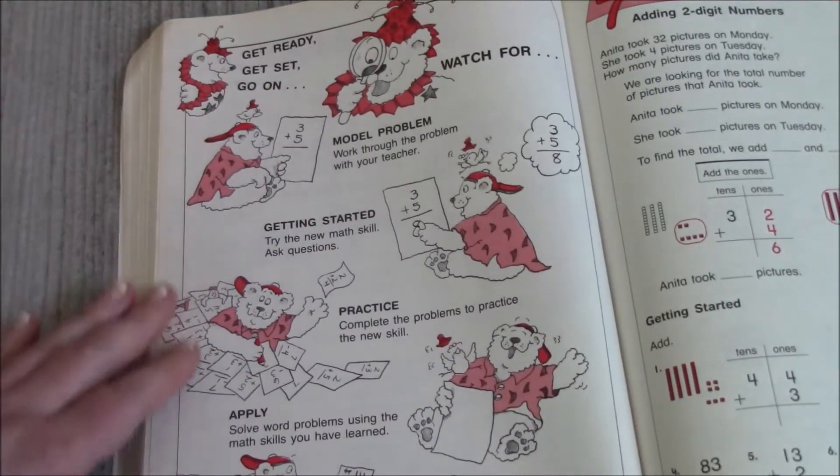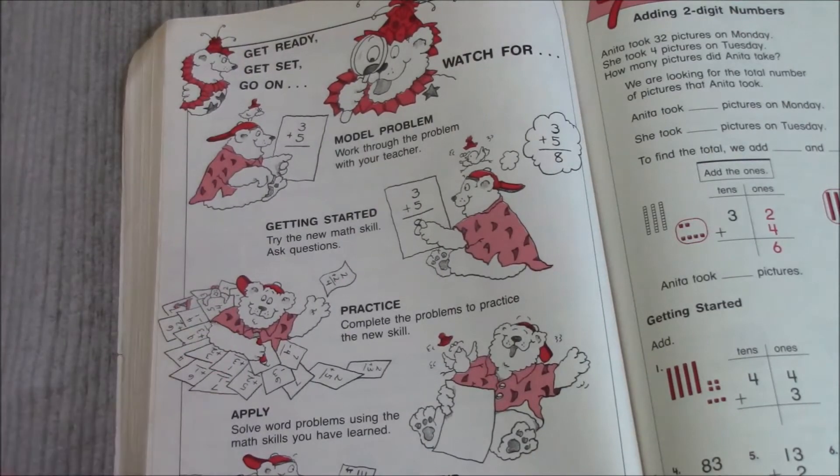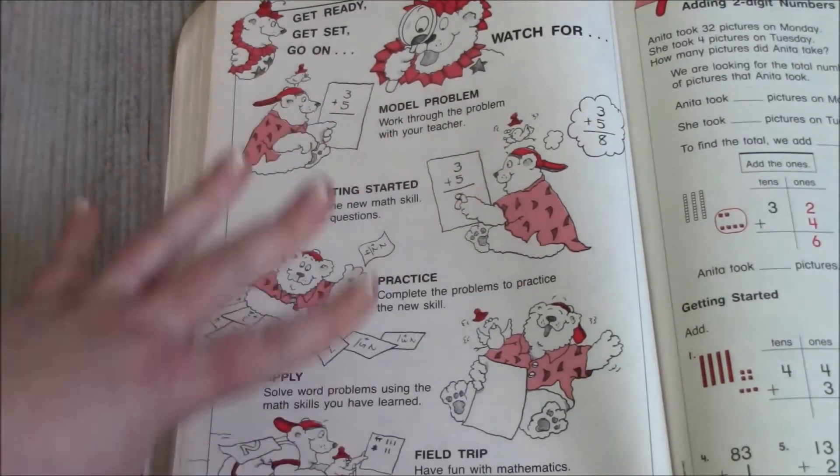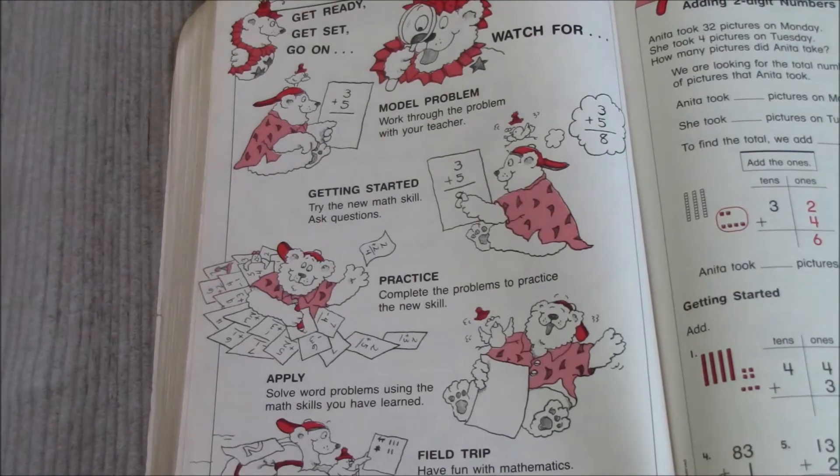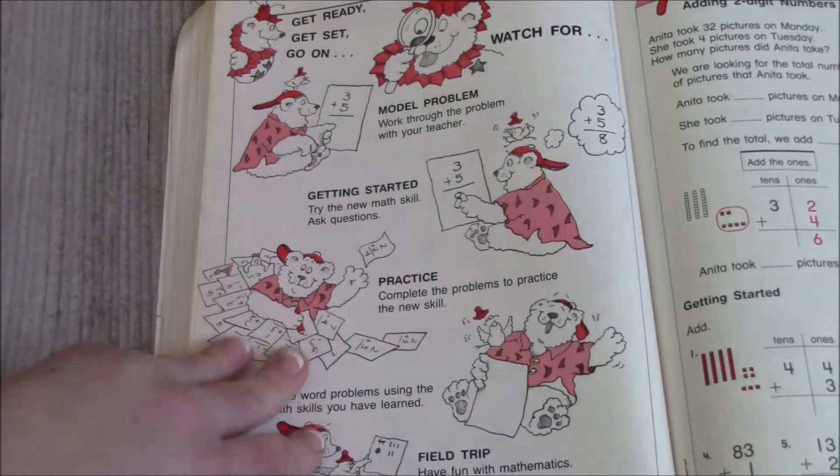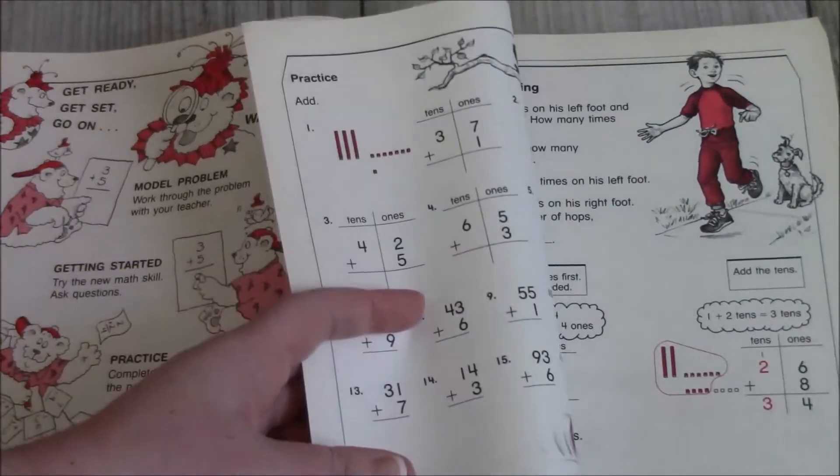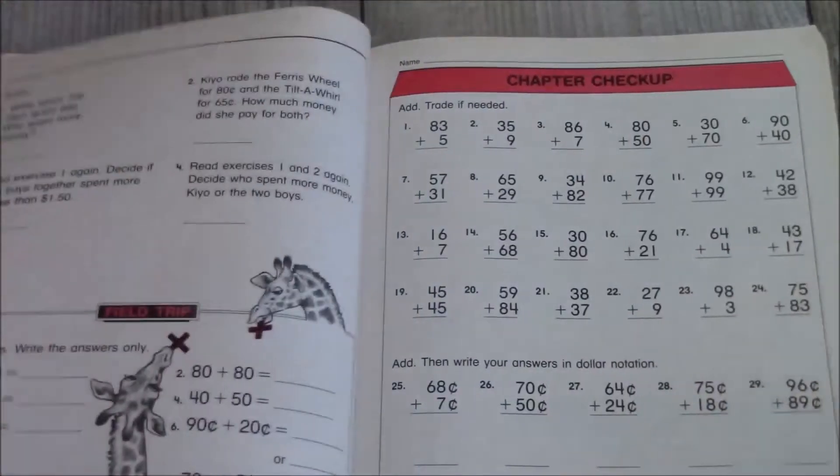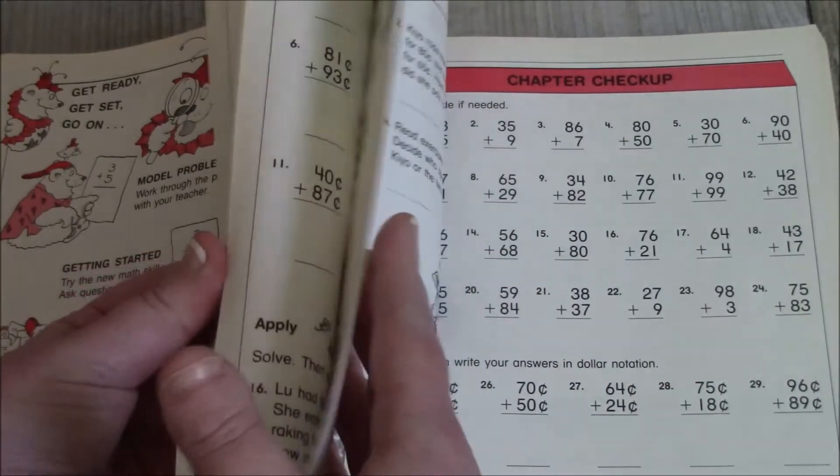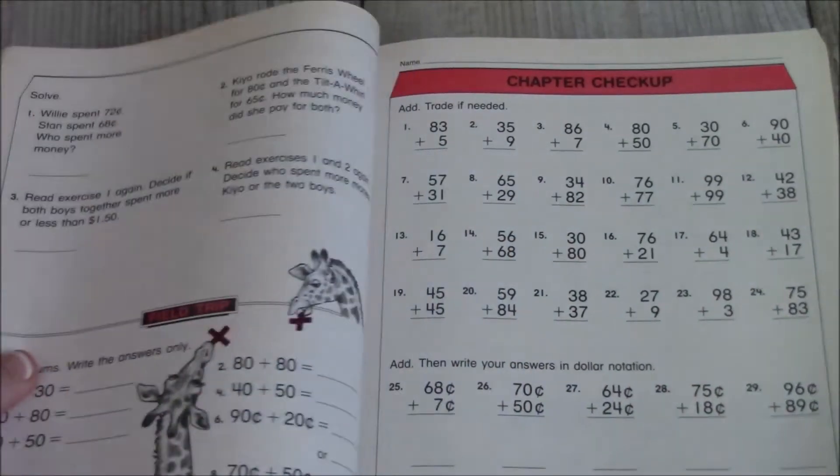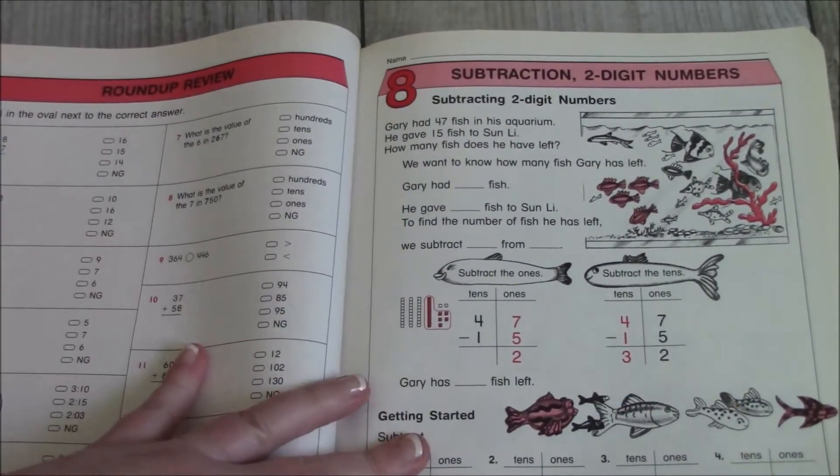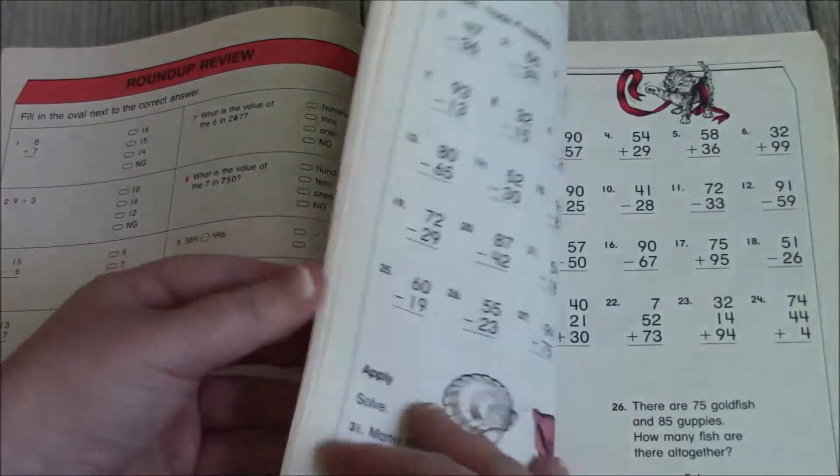Then we're going to go into, on the back of that, you have like, hey, look out for these things. This is honestly a little too busy for me, but it's helpful to kind of know what we're going to start working on. And then chapter seven is addition and two-digit numbers. Chapter eight is subtraction with two-digit numbers.